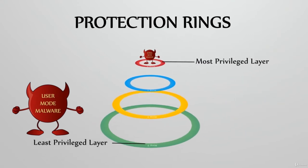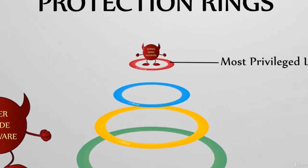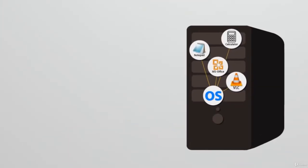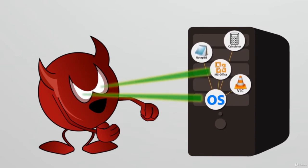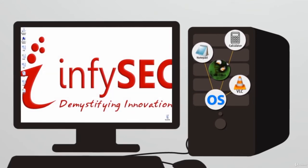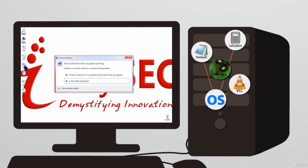The one targeting ring 0 is termed as kernel mode malware. For instance, let us have a look at this system that consists of applications such as VLC, Notepad, and MS Office, etc., on top of the OS. When the kernel mode malware corrupts the kernel program that controls the MS Office application, the link between the application and the OS is broken. None of the existing files or any new instances related to MS Office application — that is, Word, Excel, PowerPoint, etc. — can be accessed.